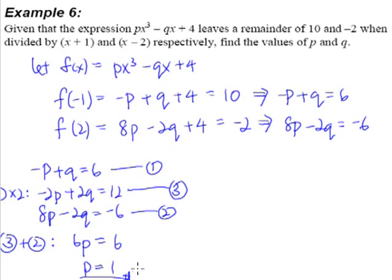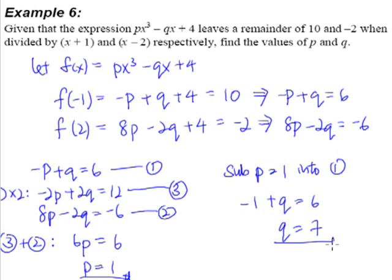Since we know that p = 1, all we have to do is substitute in p = 1. Now we will get -1 + q = 6, and therefore, q = 7.